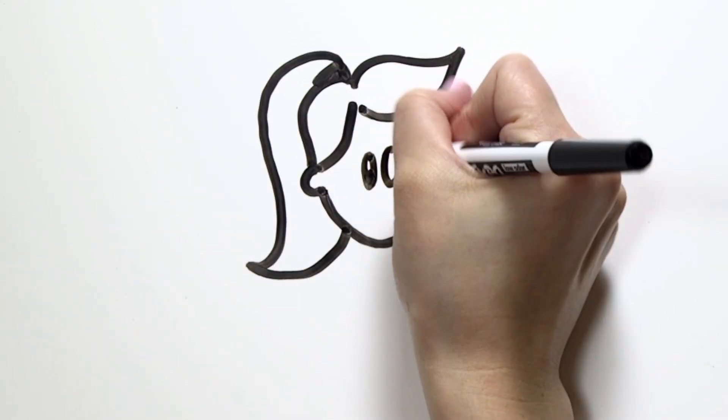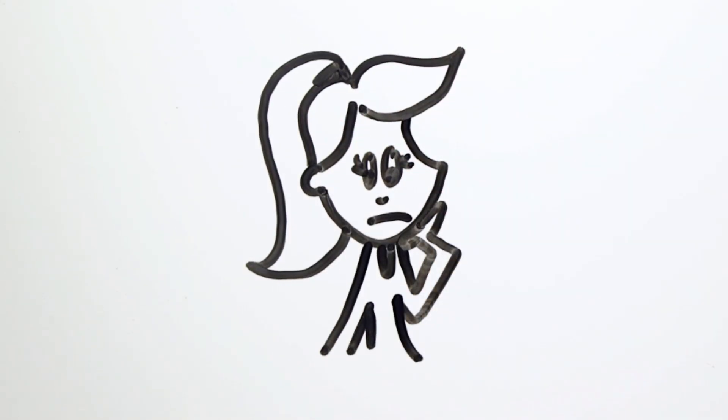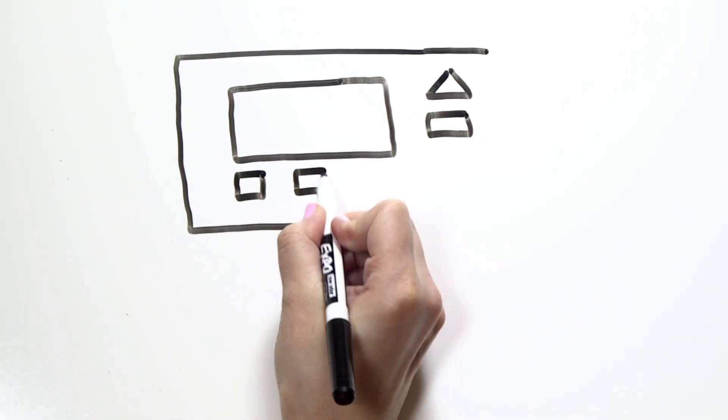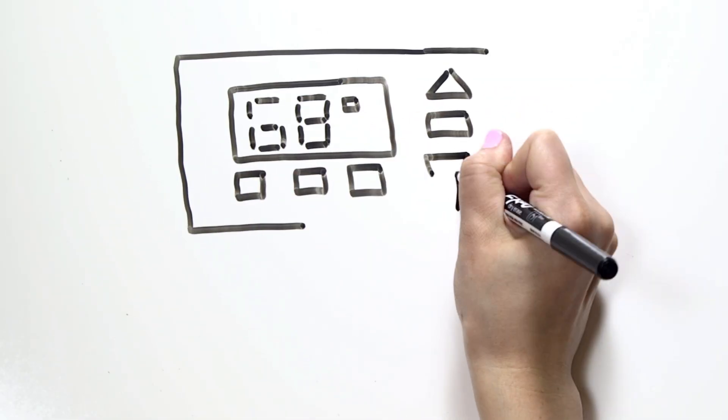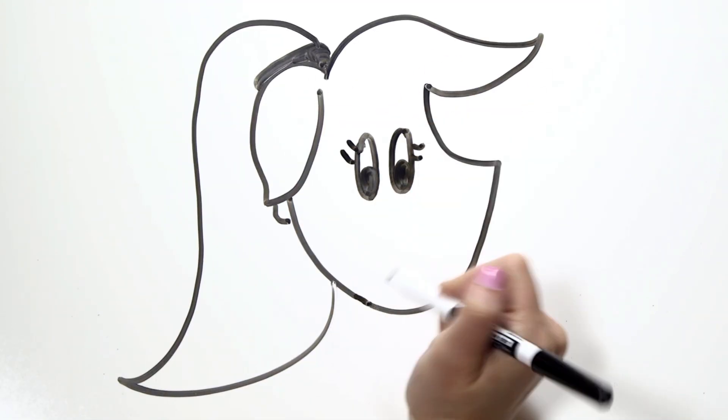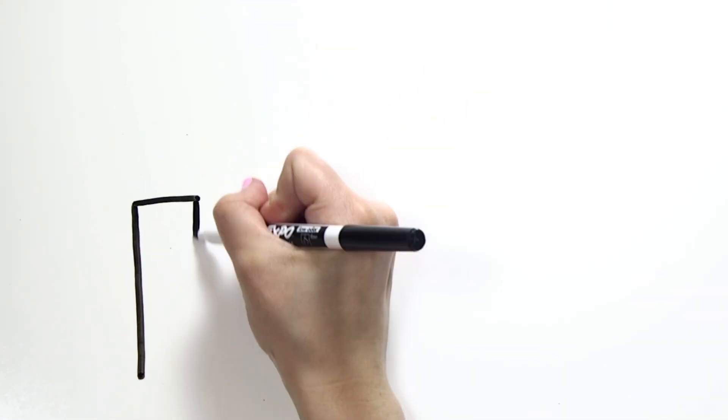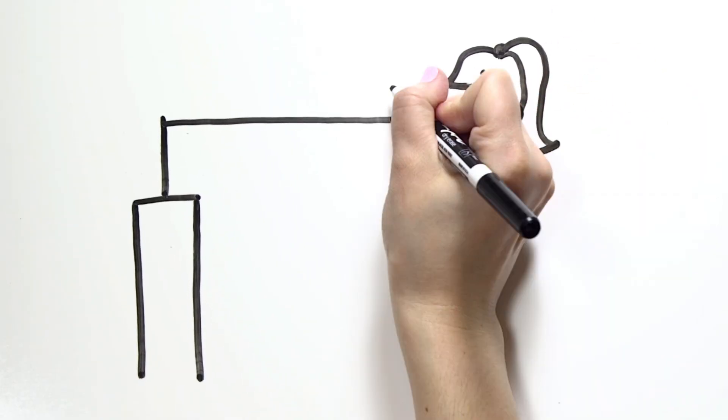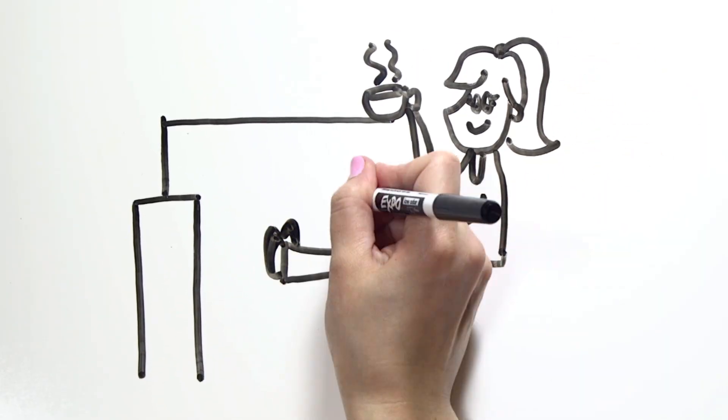So at what temperature should you set your thermostat? In cooler months, aim to keep your thermostat set to about 68 degrees when you're home and awake. Not used to that temperature? Grab a blanket, invest in a new pair of slippers, make yourself a cup of tea.